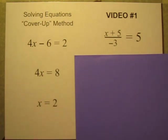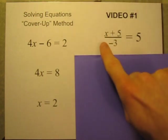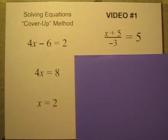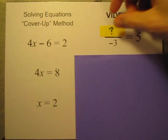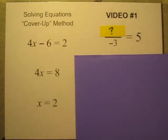So let me show you this one. x plus 5 all divided by negative 3 is equal to 5. But if we just cover up this chunk of the equation that has the x in it, it's just a simple division problem.